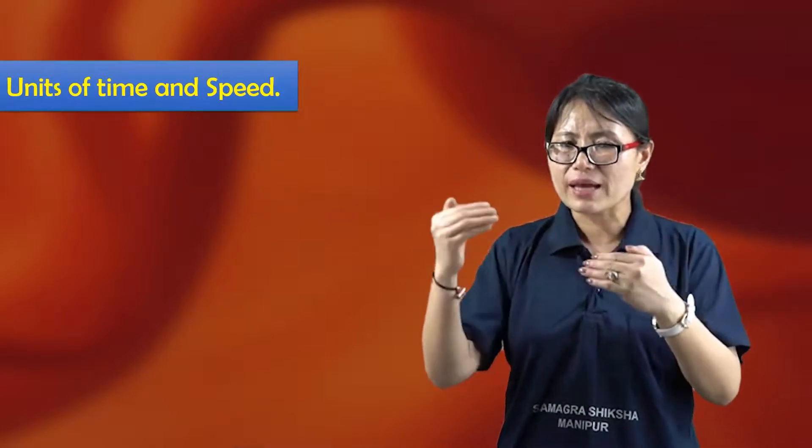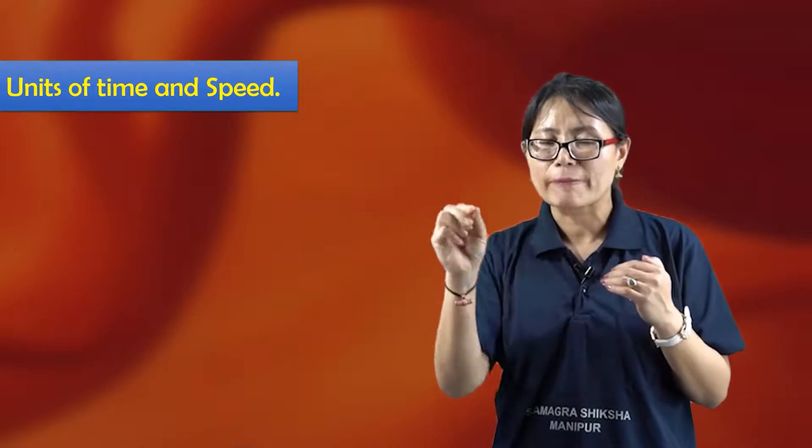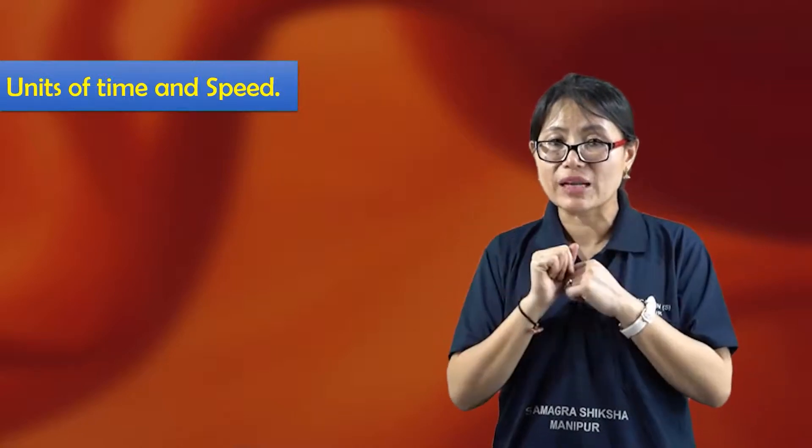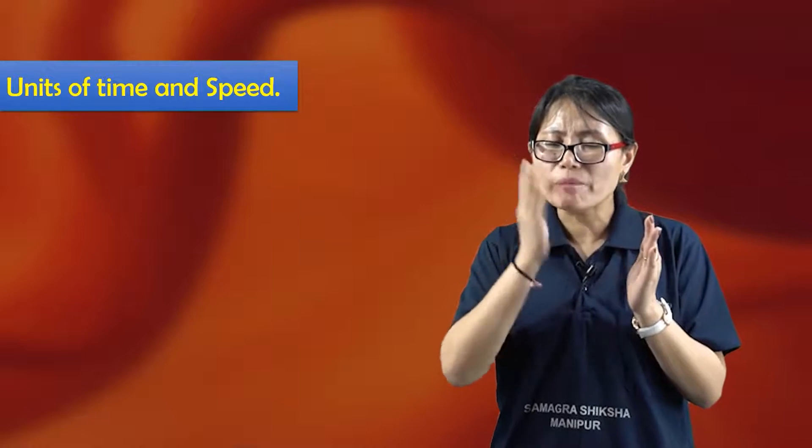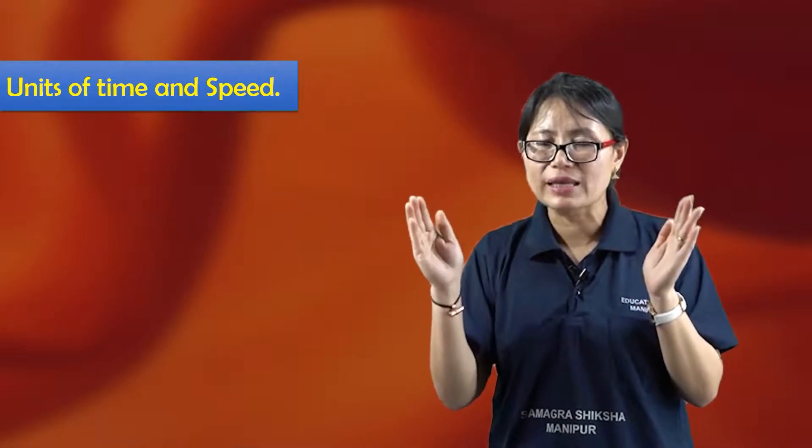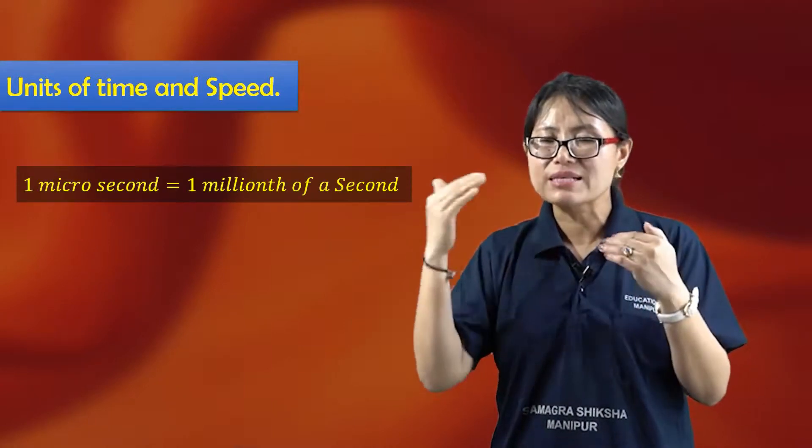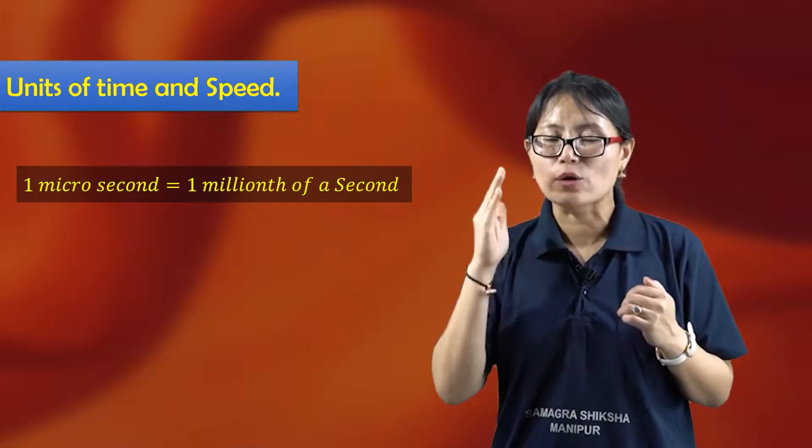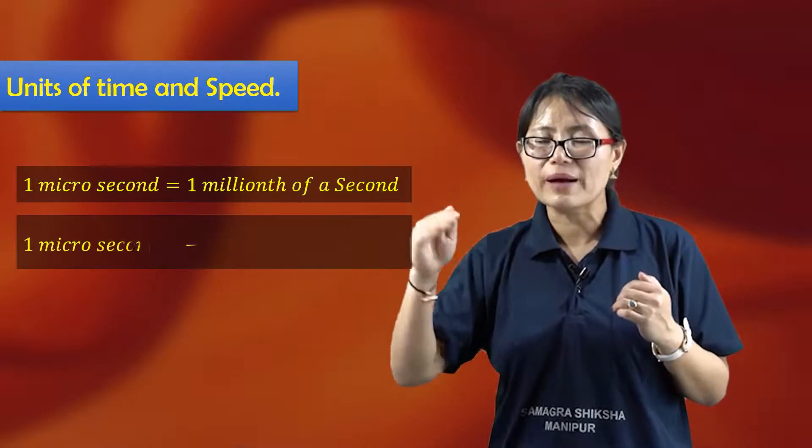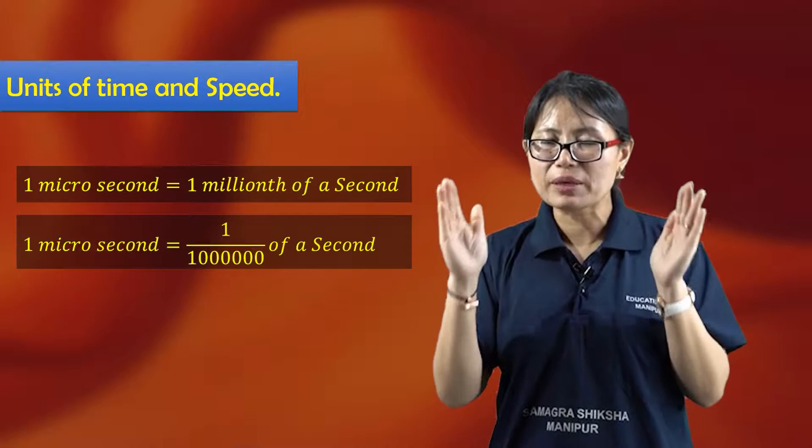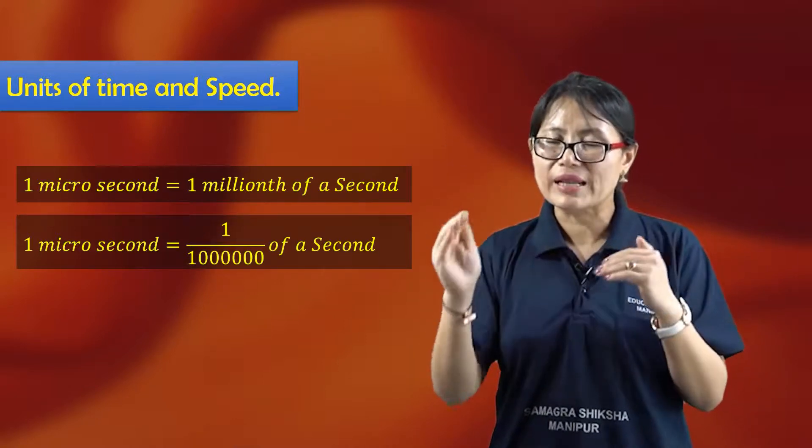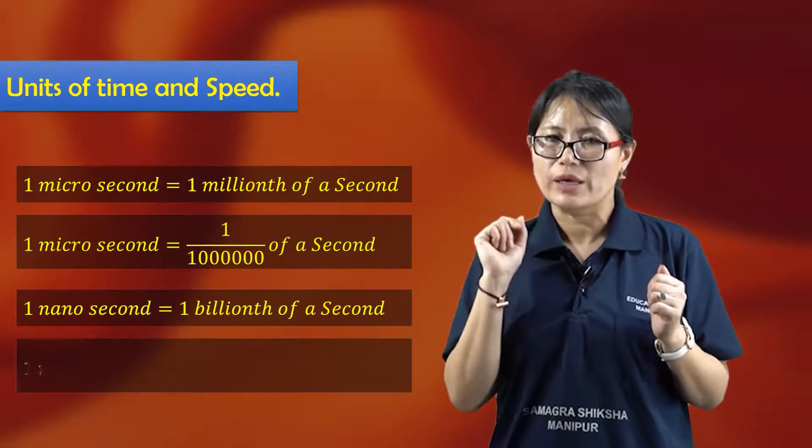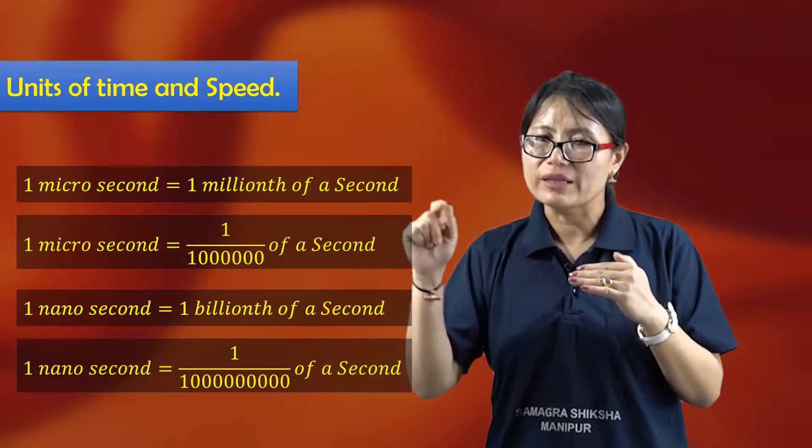One millisecond is one second divided by one thousand. One microsecond is one second divided by one million, which has six zeros. One nanosecond is one second divided by one billion, which has nine zeros.